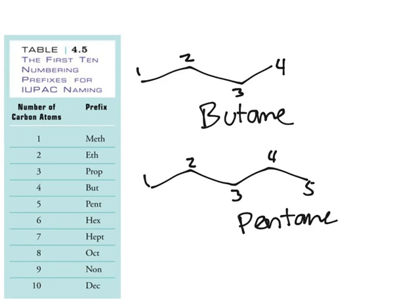And so on. Six would be hexane, seven would be heptane, eight would be octane, nine would be nonane, and ten would be decane. It's essentially just a pattern.